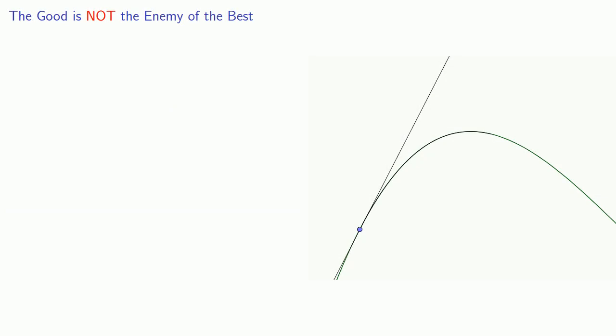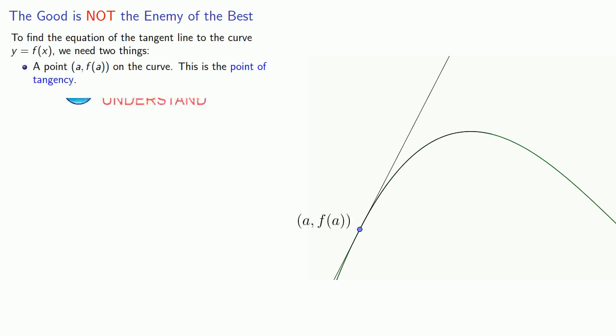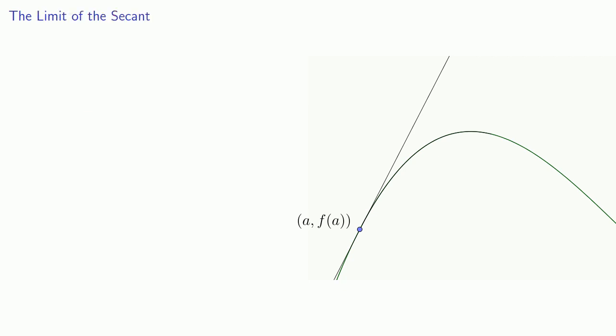So how do we solve the problem of finding a tangent to a curve? To find the equation of the tangent line to the curve y = f(x), we'll need two things. First, a point (a, f(a)) on the curve. This is the point of tangency. And second, the slope of the tangent line. So how do we find that slope?